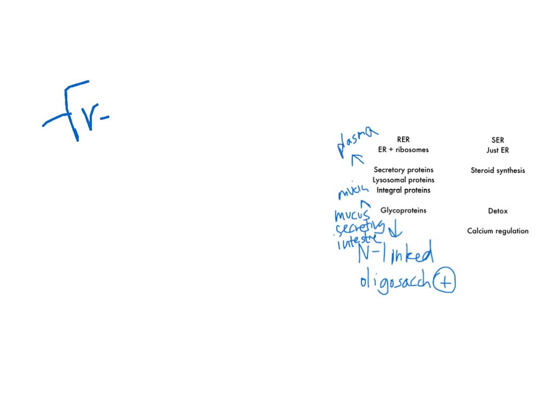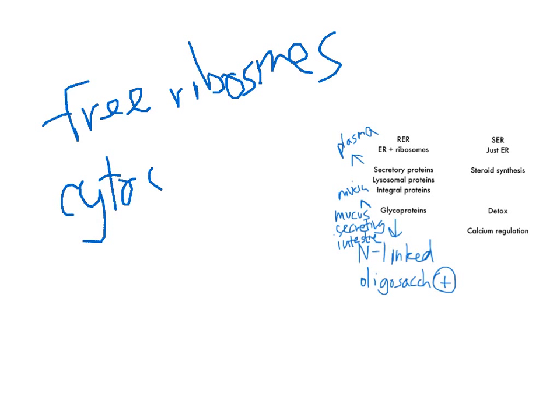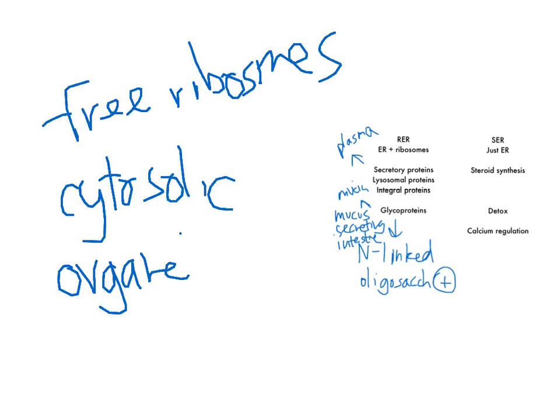Free ribosomes are ones that are not on the RER. Since these aren't on the RER, they're not going to be making things that are outside the cytoplasm. They are unattached to any membrane and are the site of cytosolic proteins as well as organellar proteins — stuff that the cell itself needs. So ribosomes attached to the RER make secretory proteins outside the cytoplasm, while free ribosomes make cytosolic and organellar proteins.